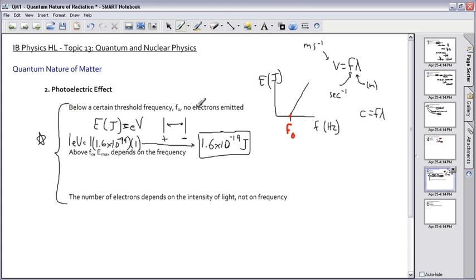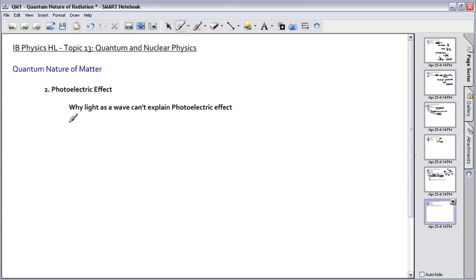Back to photoelectric effect. Below a certain threshold frequency, no electrons are emitted. Above this frequency, the maximum kinetic energy depends on frequency - bigger frequency means bigger energy. The number of electrons kicked out depends on the intensity of light, not on frequency. That was another really strange thing Einstein explained.